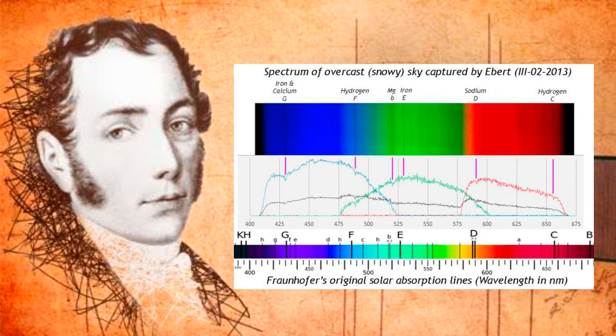In conclusion, Fraunhofer lines are an important tool in understanding the universe. By studying the chemical fingerprint of celestial bodies, astronomers can determine the chemical makeup of stars, galaxies, and planetary atmospheres. These lines also allow us to study the motions of celestial bodies and the expansion of the universe. Spectroscopy is a powerful technique that allows us to study these lines and the material that makes up celestial objects. We hope you enjoyed learning about Fraunhofer lines and the role they play in understanding the universe.